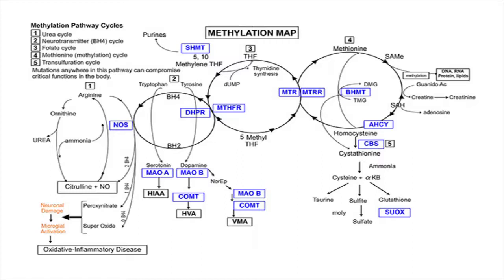You see the methionine cycle is cycle number four, and you see methionine there. When that cycle is working in a positive direction, it is going clockwise. So methionine becomes adenosylated and becomes S-adenosylmethionine. S-adenosylmethionine is SAM — your body's main methyl donor.